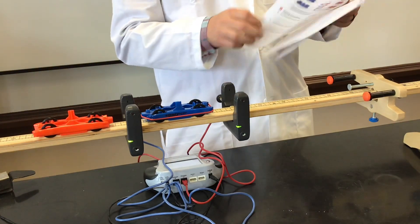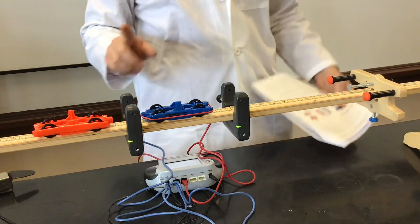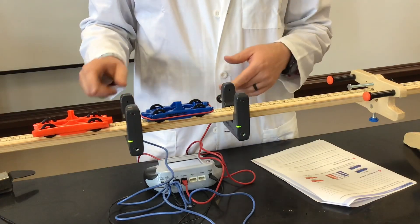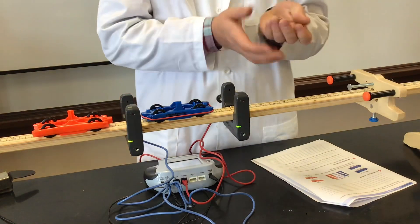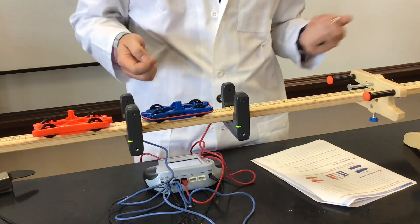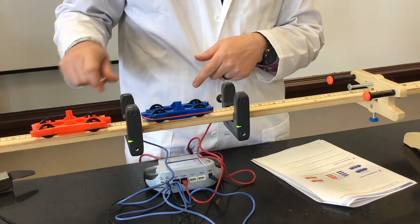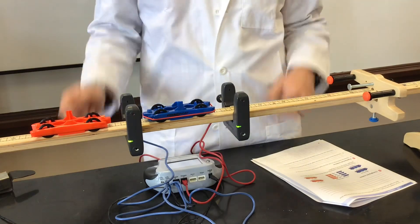The last part of the lab, you actually don't need the photo gates for. It's all qualitative, so you can take those off. Then the students are just going to test using different combinations of marbles. You'll do two marbles in the orange one, no marbles, two marbles in the blue one, and then two in each, and see how those interactions go.